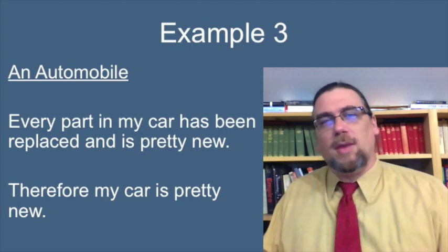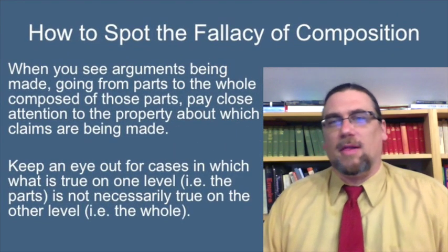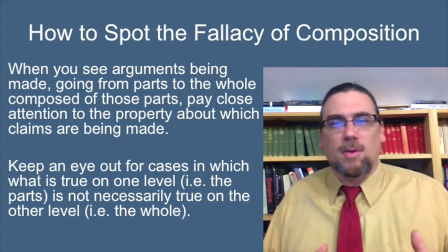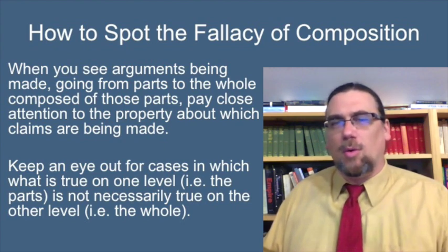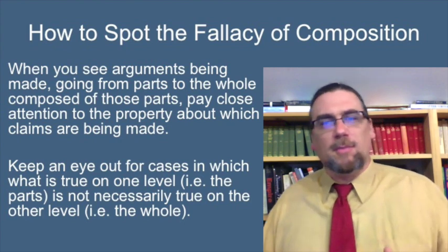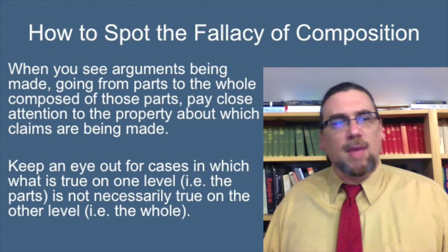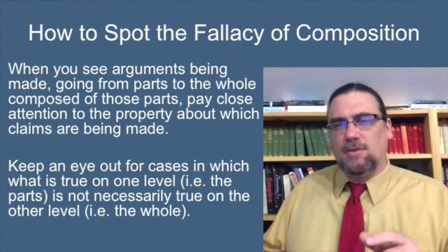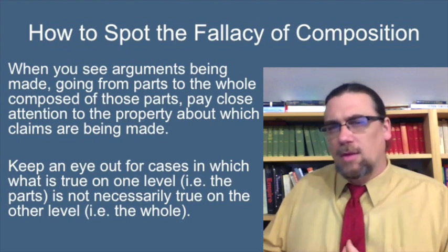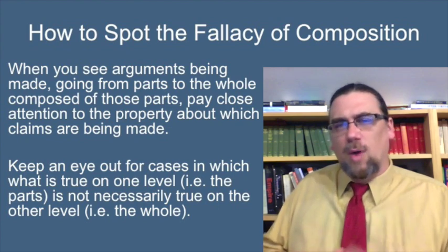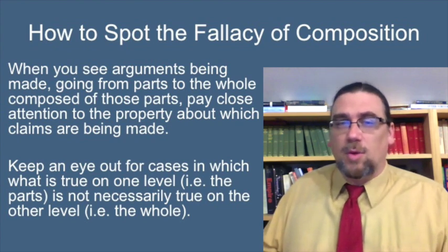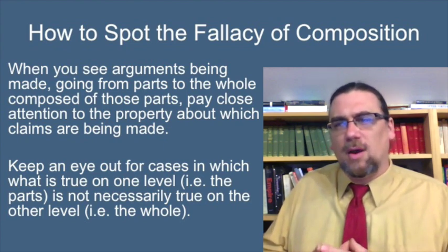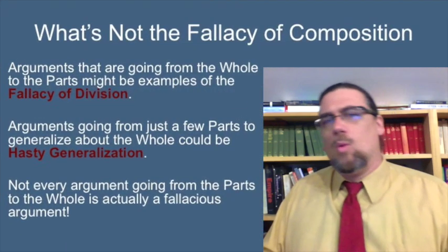How do we spot the fallacy of composition in the wild — in our day-to-day discussions? When you see arguments going from parts to the whole composed of those parts, pay close attention to the property about which the claims are being made. Don't worry at first about whether these are genuinely parts of the whole; look at that property. Think about whether it's something that can be transferred from parts to whole, or whether there are obstacles — reasons to say no in that case. Also keep an eye out for cases in which what is true on one level is not necessarily true on the other level.